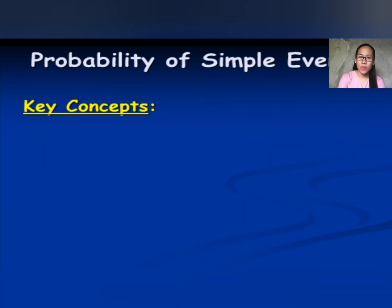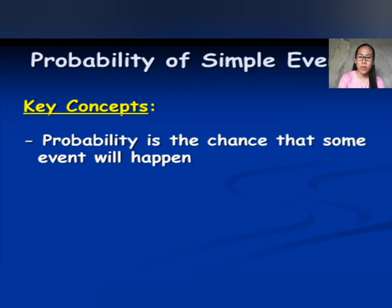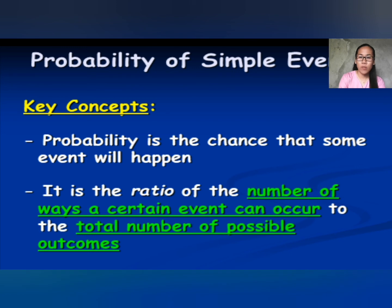Key concepts: the probability is the chance that some event will happen. It is the ratio of the number of ways a certain event can occur to the total number of possible outcomes. Always remember that.